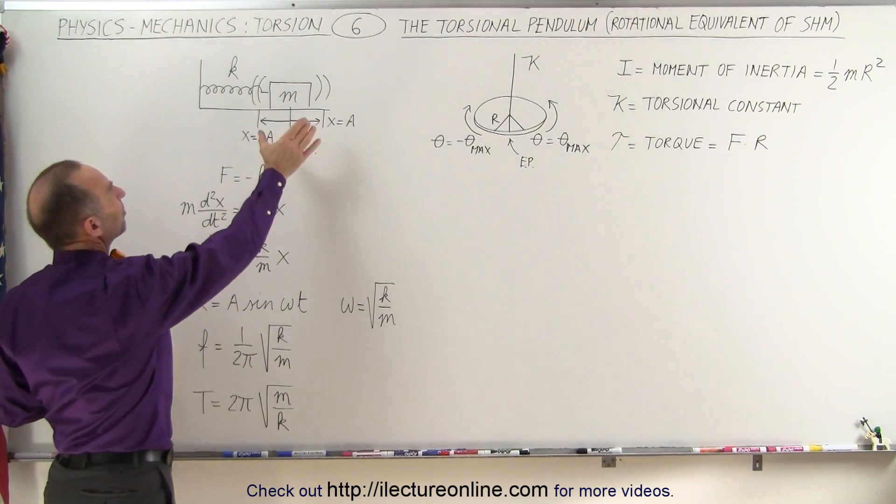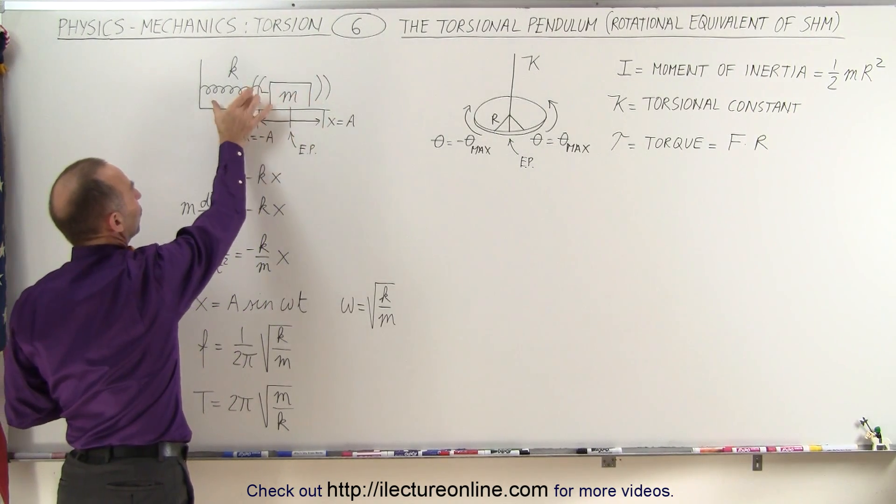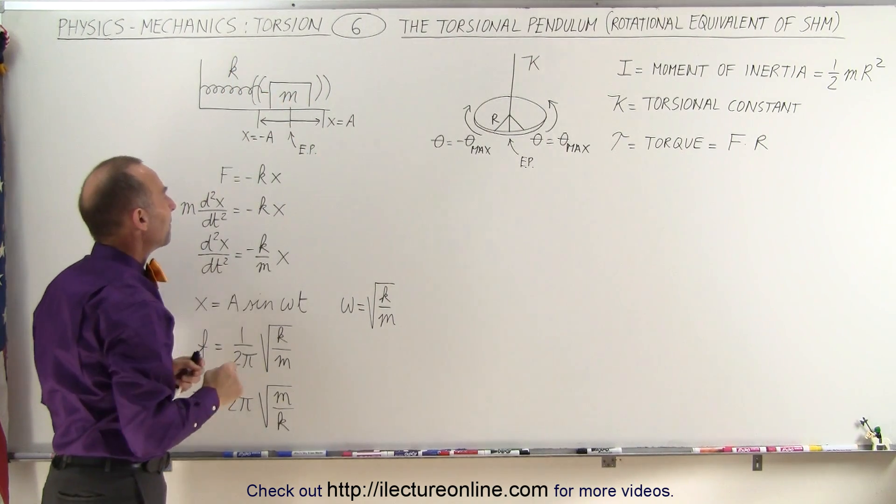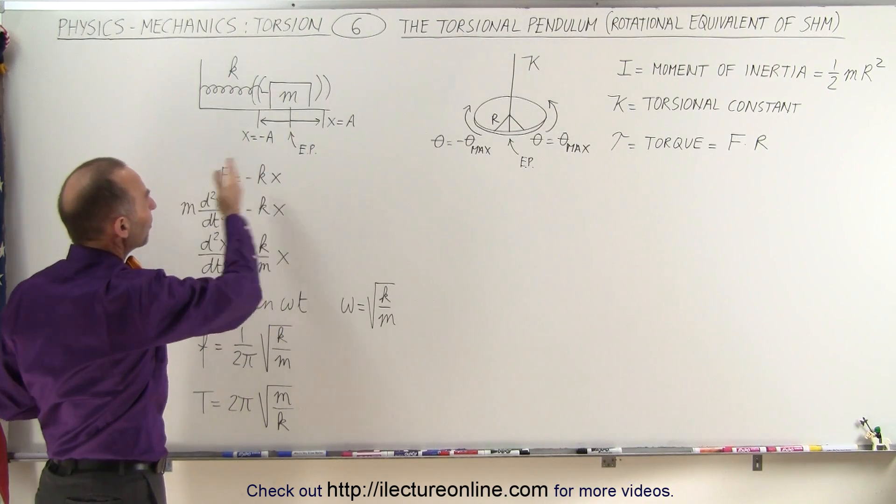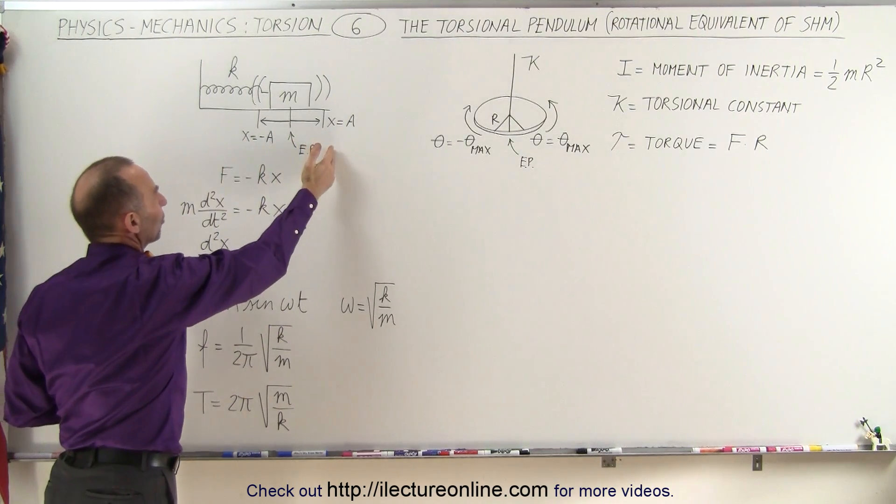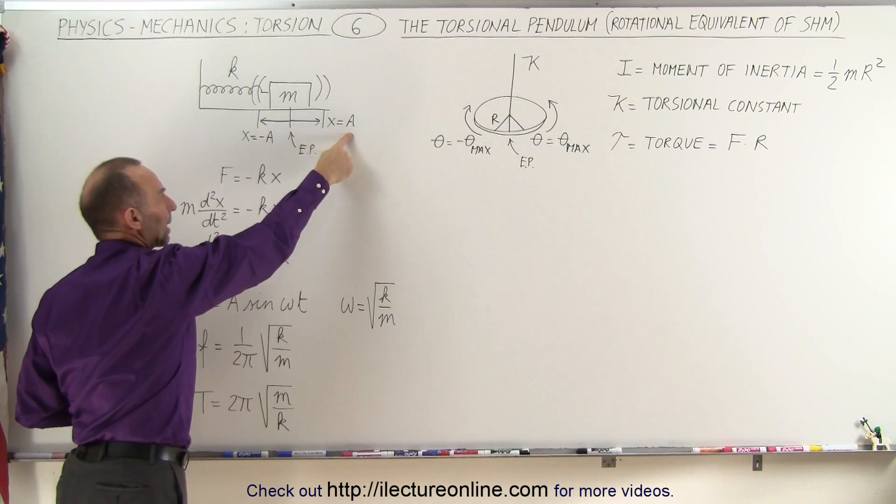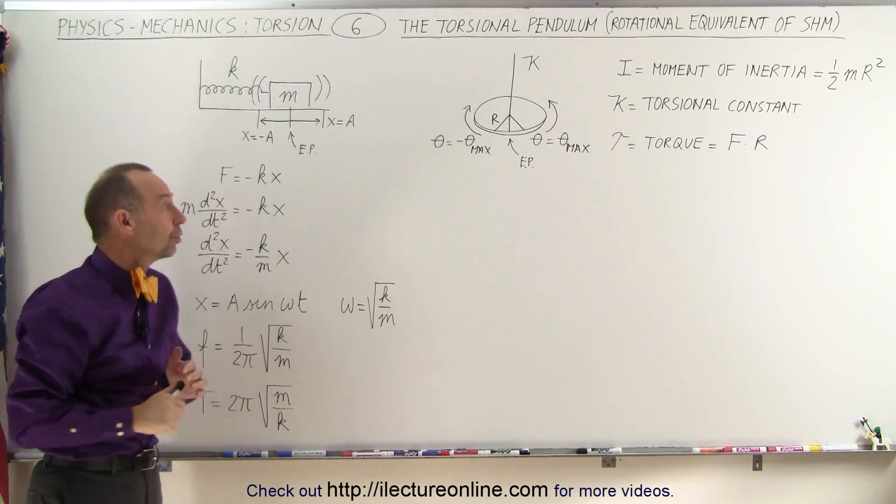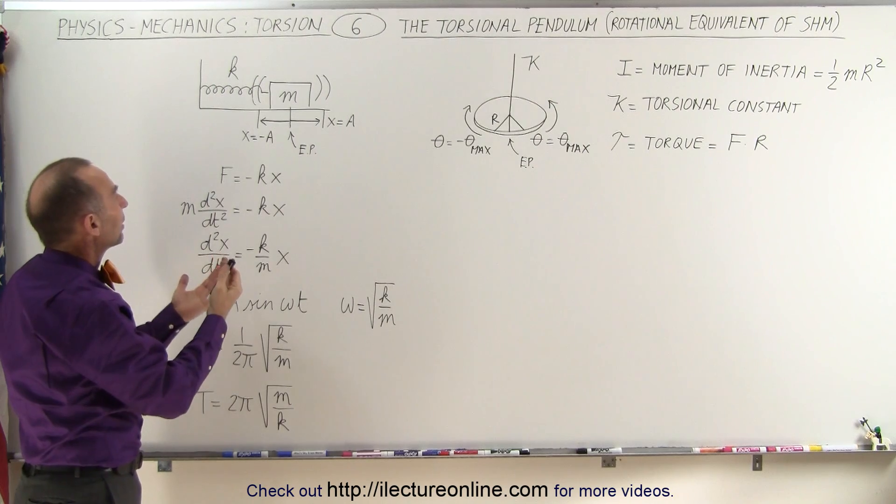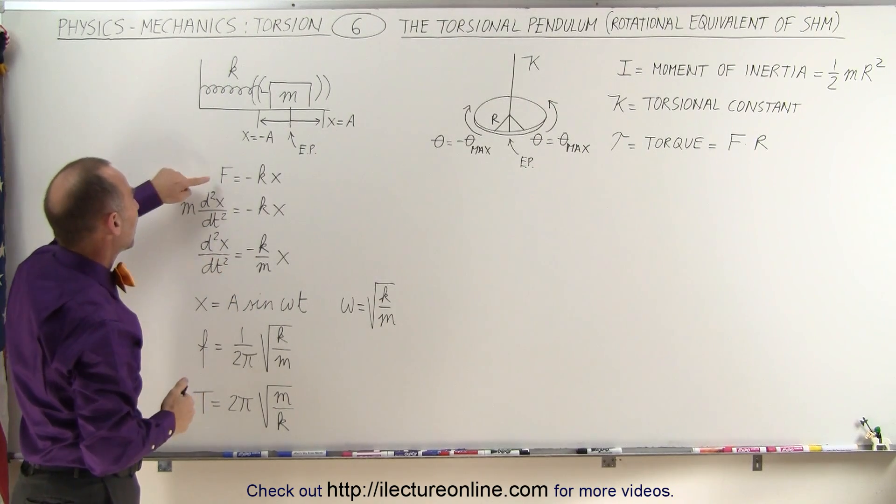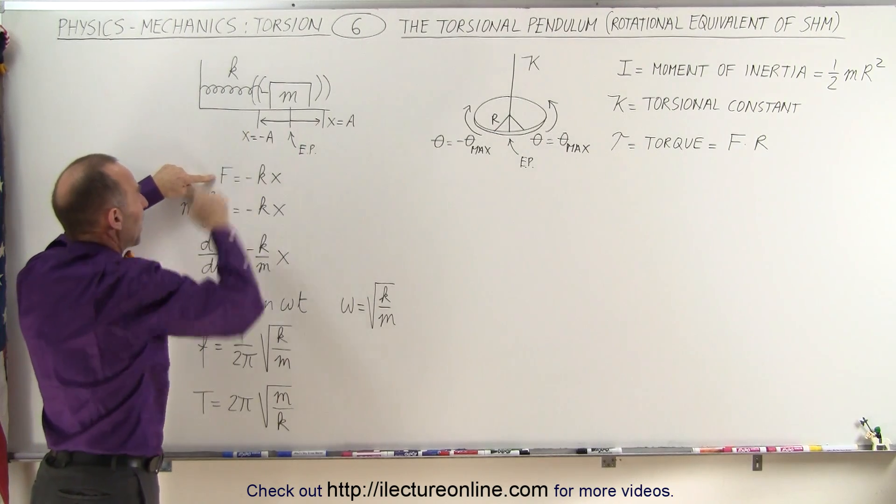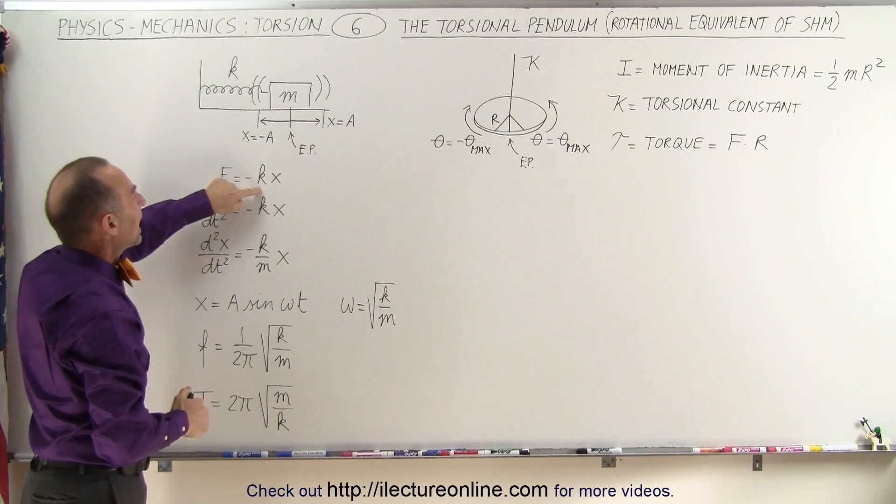Here we have what we've seen before, a mass attached to a spring. The spring has spring constant k, and the mass has mass m. As it oscillates back and forth between maximum distance in one direction where x equals the amplitude of the motion, and in the other direction where x equals the negative amplitude of the motion, we can come up with the forces, saying that the force applied to the spring, or the spring applied a force to the mass, is going to be equal to minus k times x.